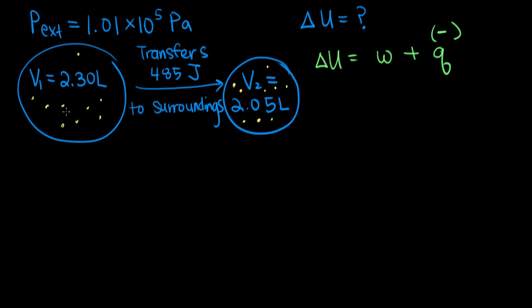Because when your system transfers energy to the surroundings, then its internal energy should go down. Work, on the other hand, since V2 is less than V1, the volume of our system went down, which means the surroundings had to do work on the gas to get the volume to decrease. We would expect, if the surroundings did work on our system, that would increase the internal energy. So that means the work done here is positive.